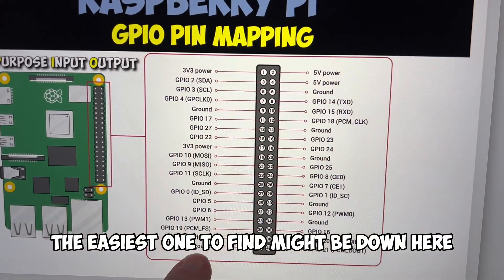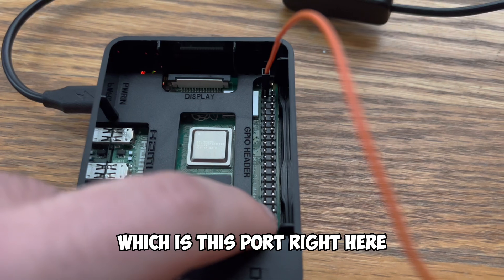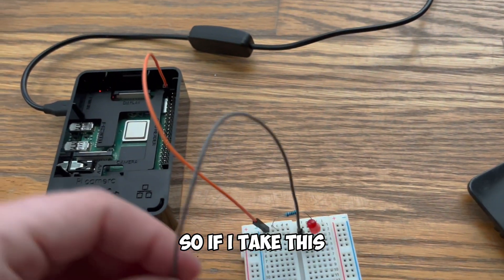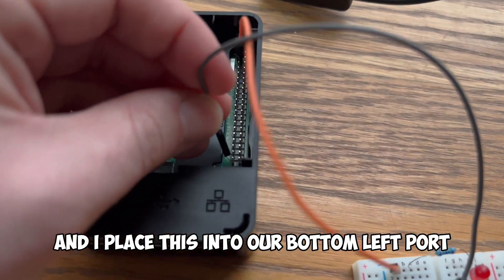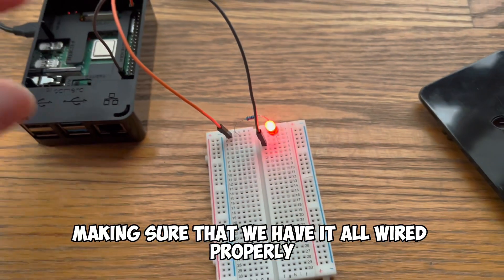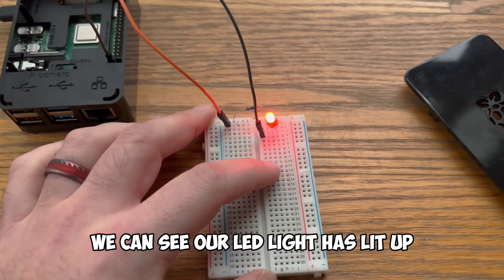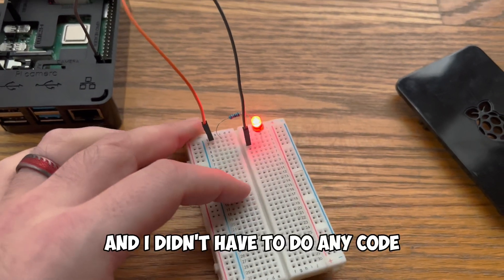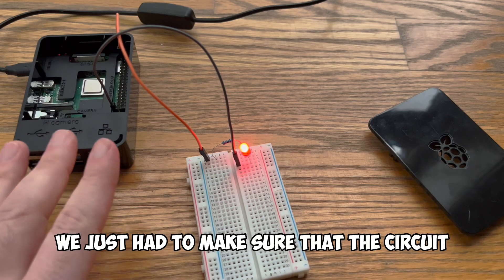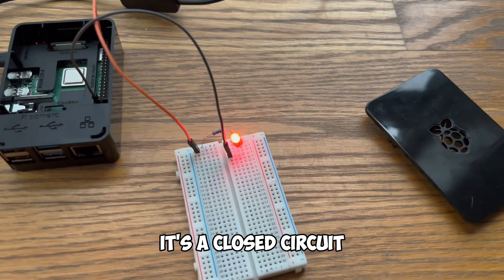And we actually have a lot of ground ports on the Raspberry Pi. The easiest one to find might be down here at the bottom left which is this port right here. So if I take this and I place this into our bottom left port which is for the ground making sure that we have it all wired properly we get action. We can see our LED light has lit up and I didn't have to do any code. We just had to make sure that the circuit was fully connected. It's a closed circuit.